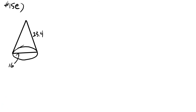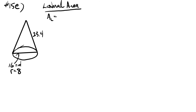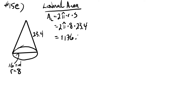15e. We've got a cone with a slant height of twenty three point four and a diameter of the base of sixteen. Since most calculations with circles use the radius, we halve the diameter to get a radius of eight. The lateral area equals two pi times the radius times the slant height — that's two pi times eight times twenty three point four, which gives us one thousand one hundred and seventy six point two units squared.